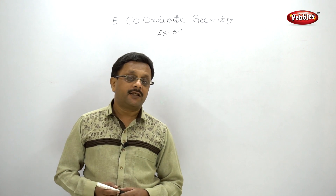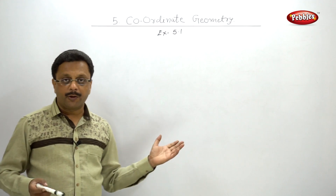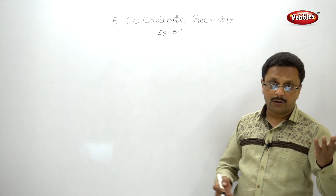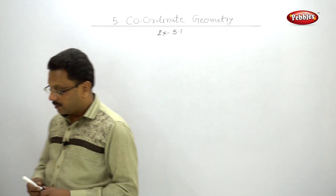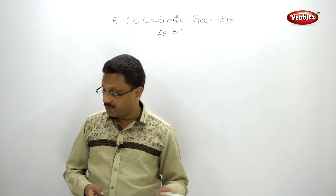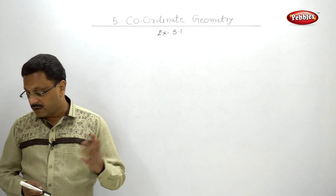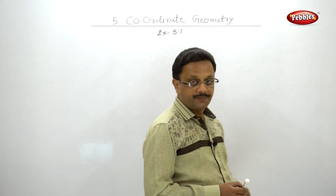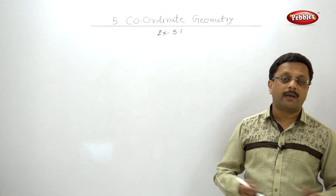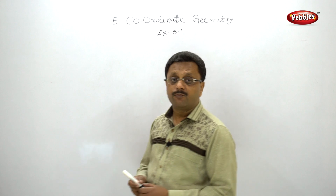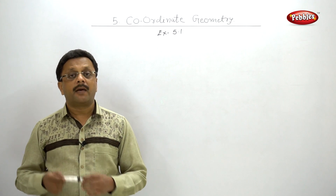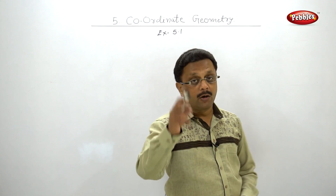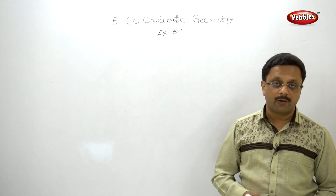I'm not writing on the board because the book is in front of you — just open Exercise 5.1 and read along with me. The third sub-part appeared in the March 2015 exam for two marks: points C(3, 5) and D(-2, -3). Simply apply the formula m = (y2 - y1) / (x2 - x1). Please pause the video, solve this example, and check the answer at the back of the book.